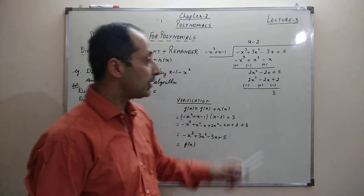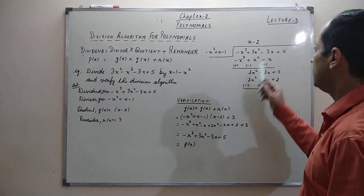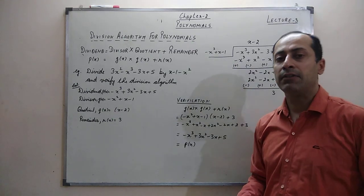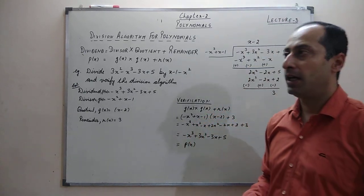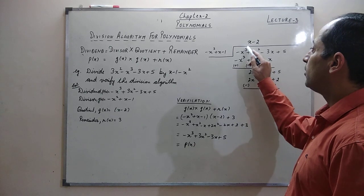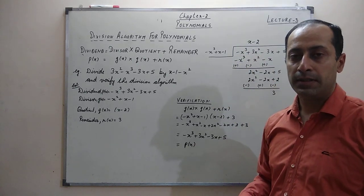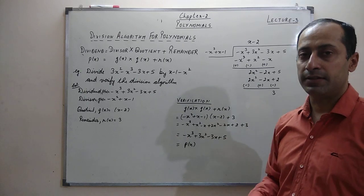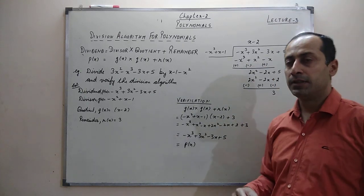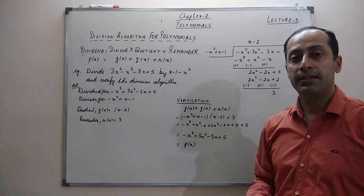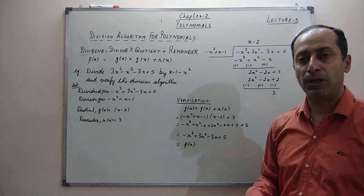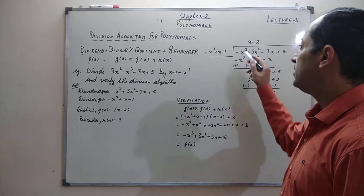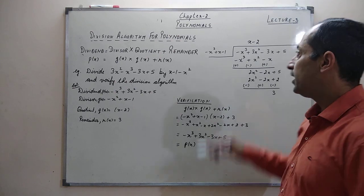On this side I have written -x³ + 3x² - 3x + 5 and I am dividing by -x² + x - 1. When dividing two polynomials, I check the first term of the dividend and the first term of the divisor. The first term of the dividend is -x³ and the first term of the divisor is -x². By what number should I multiply -x² to get -x³? The answer is x, so I write x on top.